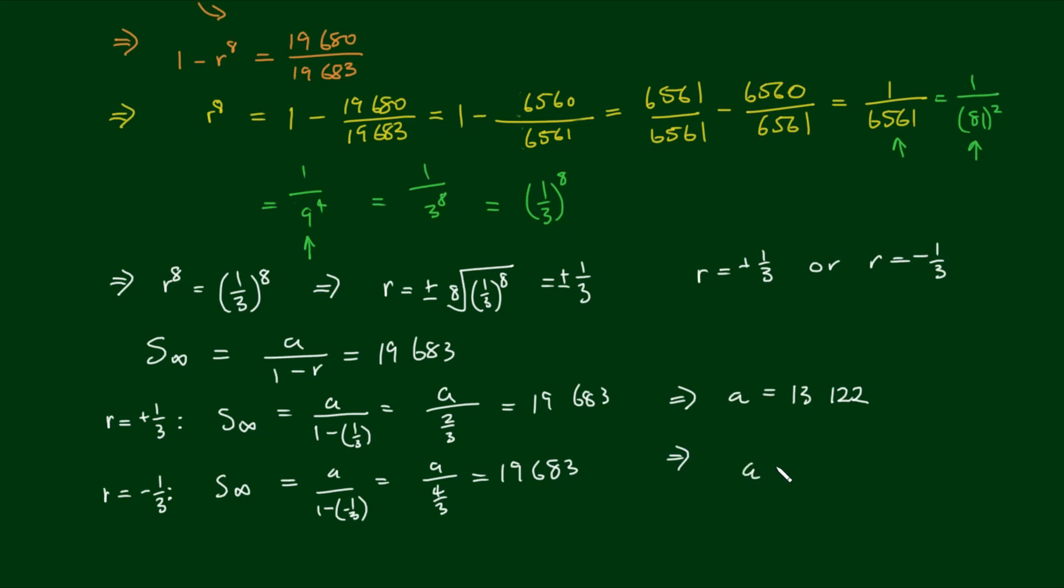And that means a equals 19,683 by 4 thirds, and that gives the first term as 26,244.